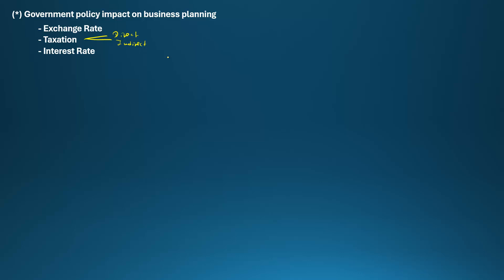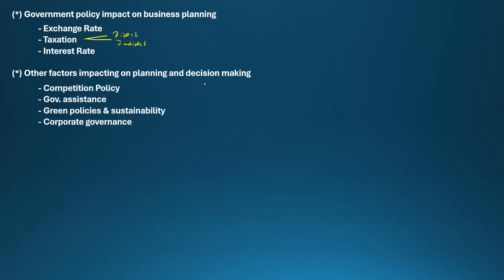Taxation will have an impact on our planning, as will interest rates — when running a business we take loans and make future investment decisions based on interest rates. Other factors impacting planning and decision making include: competition policy, where the government implements policies to ensure fair competition; government assistance or grants; and green policies related to the environment and sustainability.